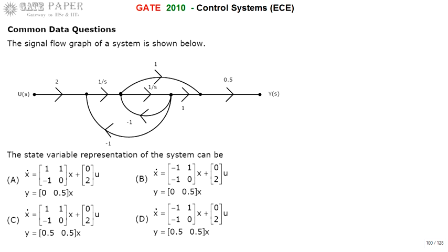We are discussing the GATE 2010 ECE paper. We need to find the state variable representation of a given signal flow graph. The general state variable equations are x_dot = Ax + Bu and y = Cx + Du. We are going to find the A, B, C, D matrices from the signal flow graph and write x_dot and y in their usual form to identify the correct answer from four options.